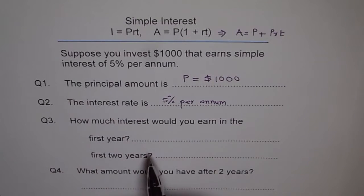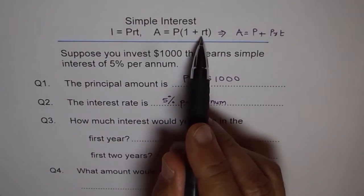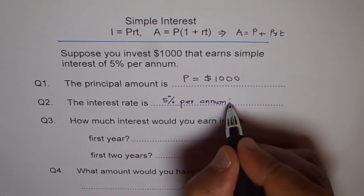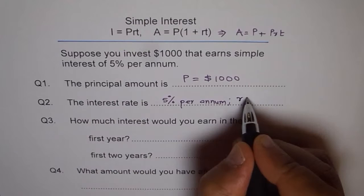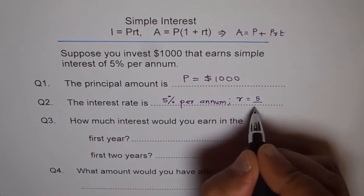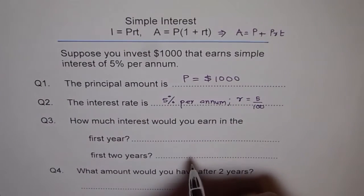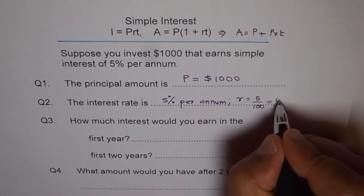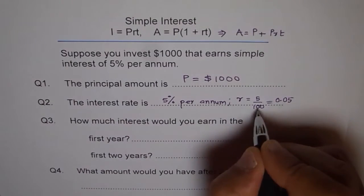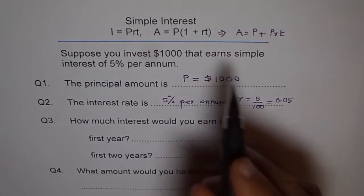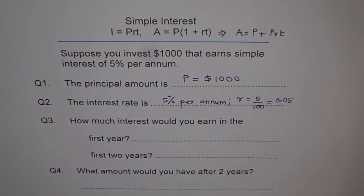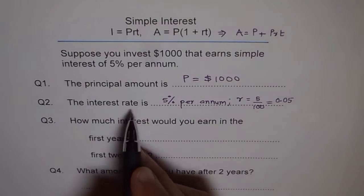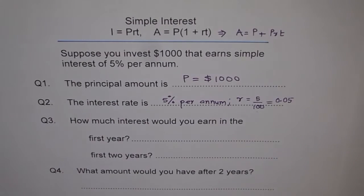The interest rate is 5% per annum. Whenever we use R in this formula, then we say 5% is R equals 5 over 100. So we don't really write 5%. We write this as 0.05, 5 over 100. So in the formula we will use 0.05. 0.05 is our interest rate as far as the formula goes.